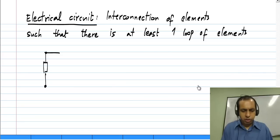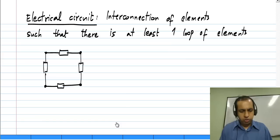We can have some components, let us not worry about what these components are at the moment. We can have a number of components connected here. A loop is something where you start from a node and you trace the elements, and somehow or the other you can go through many elements and come back to the same node.